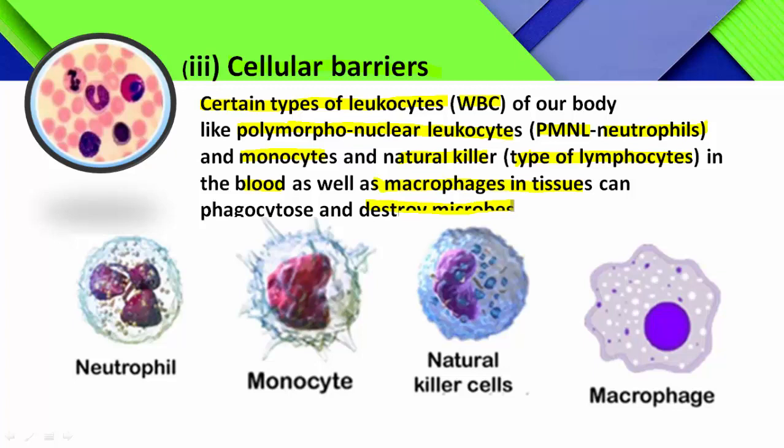Which structures represent the cellular barriers? Some types of leukocytes represent the cellular barriers: polymorphonuclear leukocytes, monocytes, and natural killers. Natural killers belong to the lymphocytes, which circulate in the blood through lymph — the colorless fluid of the body.